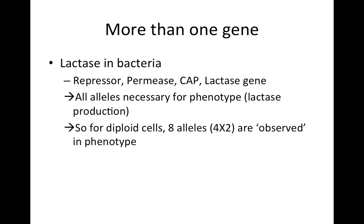We already know that this is the case, even if we haven't thought about it. When we were talking about lactase expression in bacteria, in order to figure out when a bacterium would express lactase, we had to look at multiple different genes — the allele or alleles at the repressor gene, the allele or alleles at the permease gene, and so forth. So the trait of expression of lactase in bacteria — either expressing, non-expressing, or sometimes expressing — depended on looking at multiple genes. So a trait can depend on more than one gene.